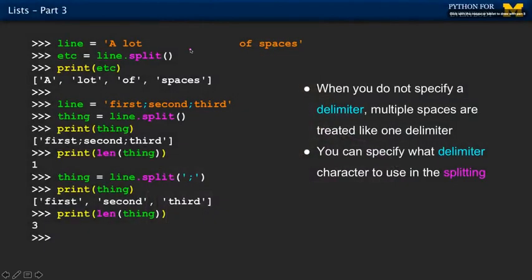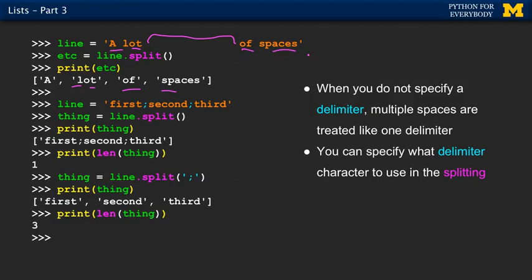A couple of subtle details about split: it splits by default on white space, and it treats more than one space as a single space. So even though there are extra spaces in a string and we split that line, we still get the four words you'd expect. It's kind of intelligent — an extra space doesn't freak split out.